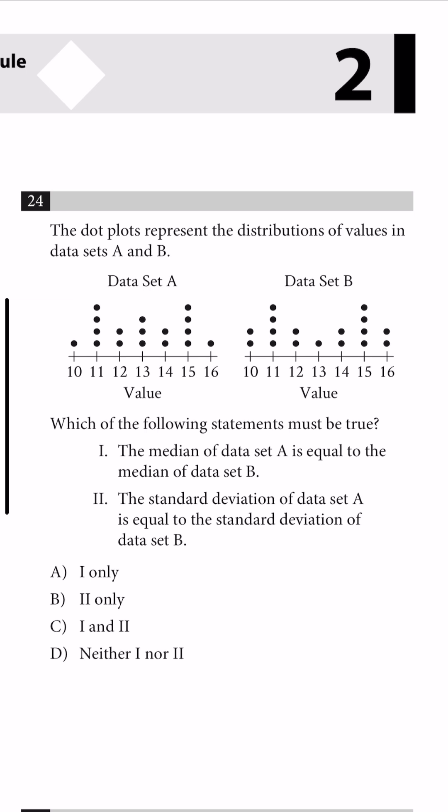For the median, we can just take the number of points, which in this case is 17, and add one and divide by two, which will get us nine. So if we find the ninth point in both data sets, we see that they're both equal to 13. So part one is correct.